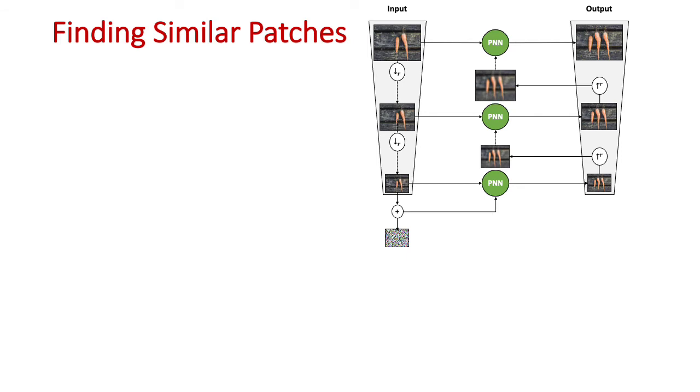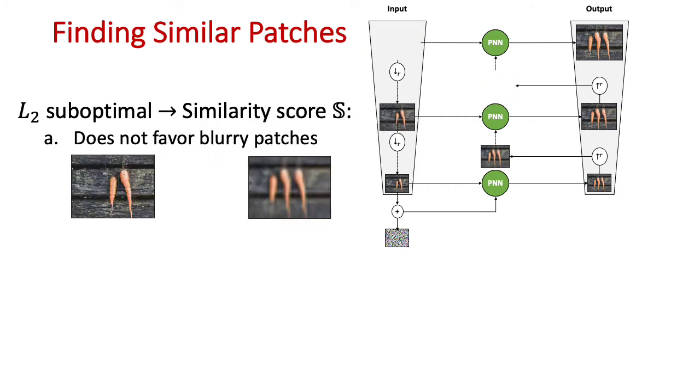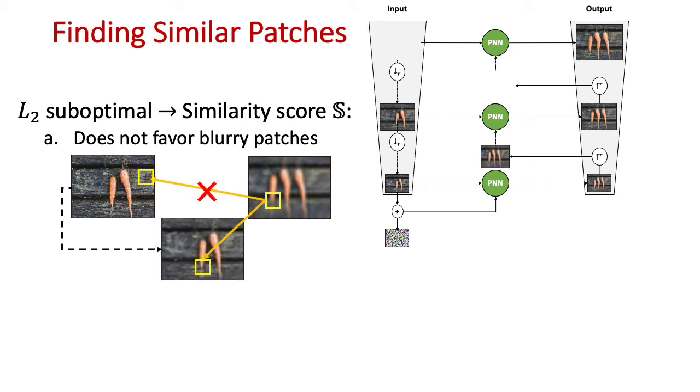But how do we find these nearest neighbors? Using L2 is suboptimal. We use a similarity score which, first, does not favor blurry patches. Searching directly for nearest neighbors in the sharp input image leads to mistakes. Instead, we conduct the search in an intentionally blurred version of the input.